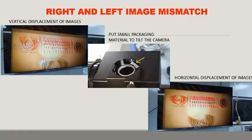The second problem you may face is that the images on the TV are vertically displaced — you can see the letters are vertically misaligned. When images are vertically displaced, you won't get a 3D effect at all. You need to do some micro-adjustments, like placing small packing material to tilt the camera on the video adapter, so that you get horizontally displaced images, which will give you the best 3D picture.